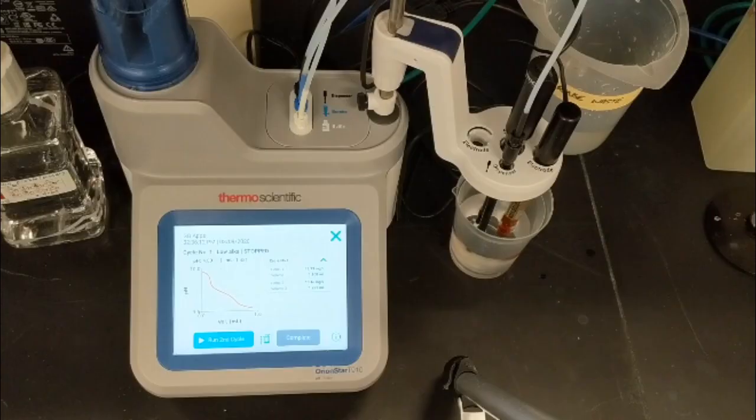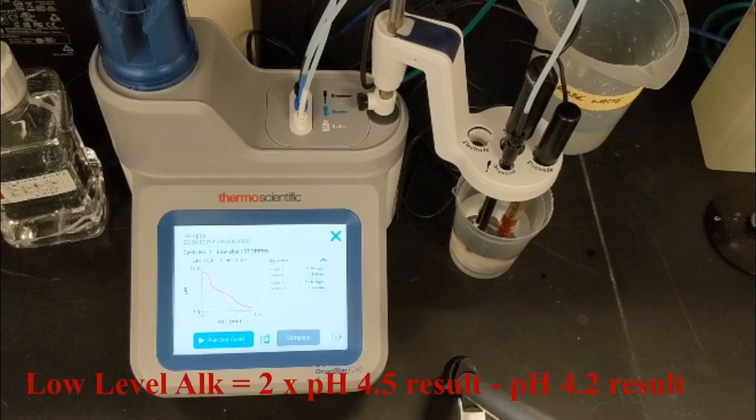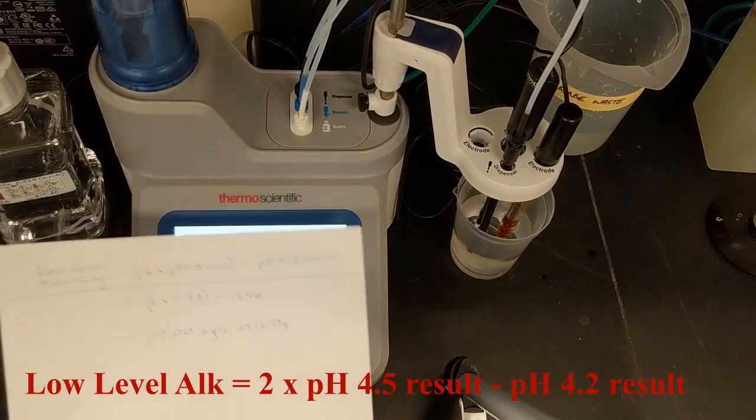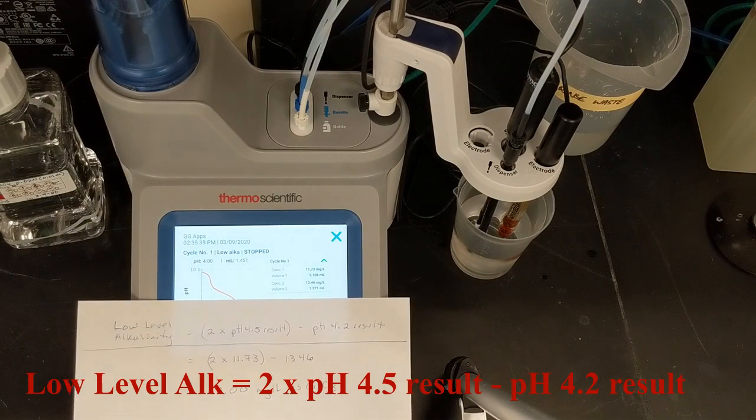When the titration is done, the results for the two endpoints are shown. From these two results, I can calculate the low-level alkalinity as 2 times the pH 4.5 result minus the pH 4.2 result.